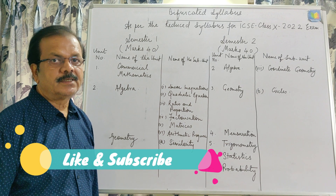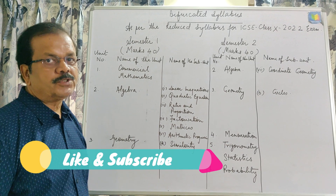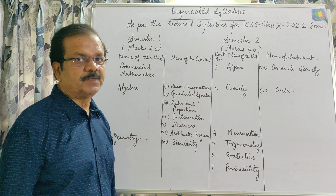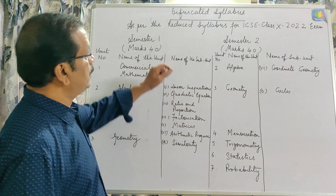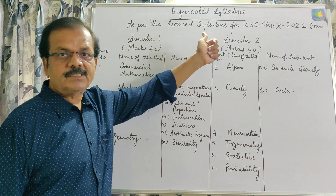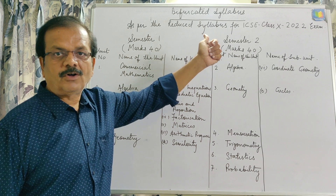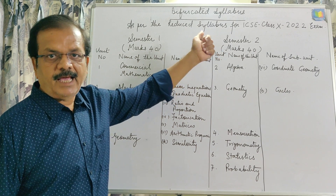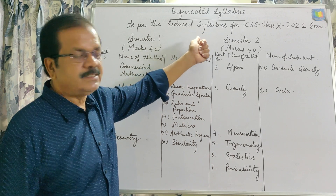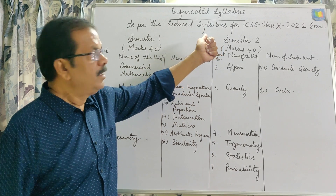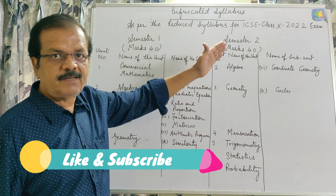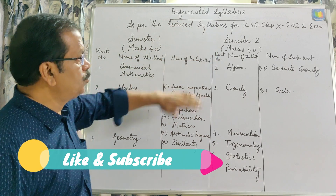Hello students, this is the most awaited announcement by the council since last month. The council has bifurcated the syllabus of class 10 — almost all subjects. This is the syllabus of class 10 maths at ICSE level. The council has bifurcated this syllabus into two parts.